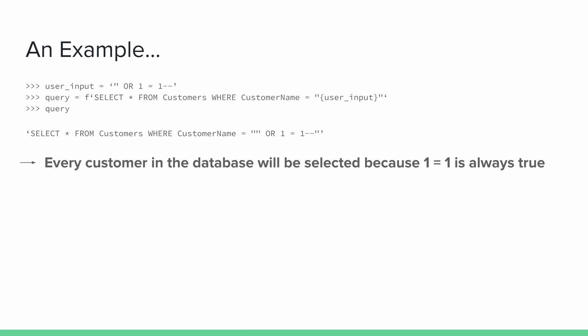But instead of the user inputting a customer name as intended, they could input something like a double quote, then 'OR 1=1', and then two dashes. If this gets put into the query, the resulting query will be: SELECT everything FROM customers WHERE the customer name is equal to an empty string OR 1=1. The rest becomes a comment, meaning it is ignored by SQL. This results in every customer in the database being selected, because 1=1 is always true.